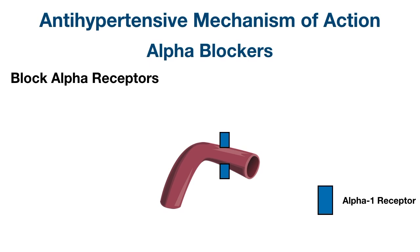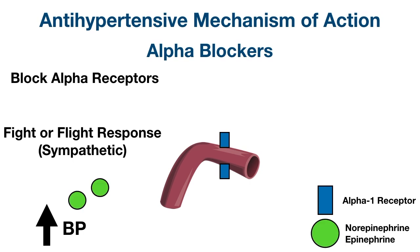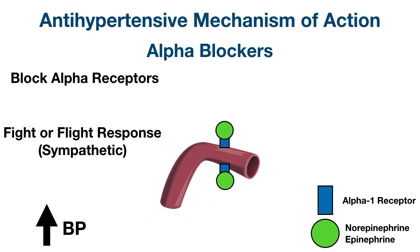Alpha receptors are a type of adrenergic receptor that play a role in our sympathetic nervous system — our fight-or-flight response in stressful or dangerous situations. One of those responses is to increase blood pressure to perfuse our vital tissues and organs by activating the alpha-1 receptors on blood vessels. Sympathetic catecholamines such as norepinephrine and epinephrine increase during a sympathetic response and bind to alpha-1 receptors on blood vessels.